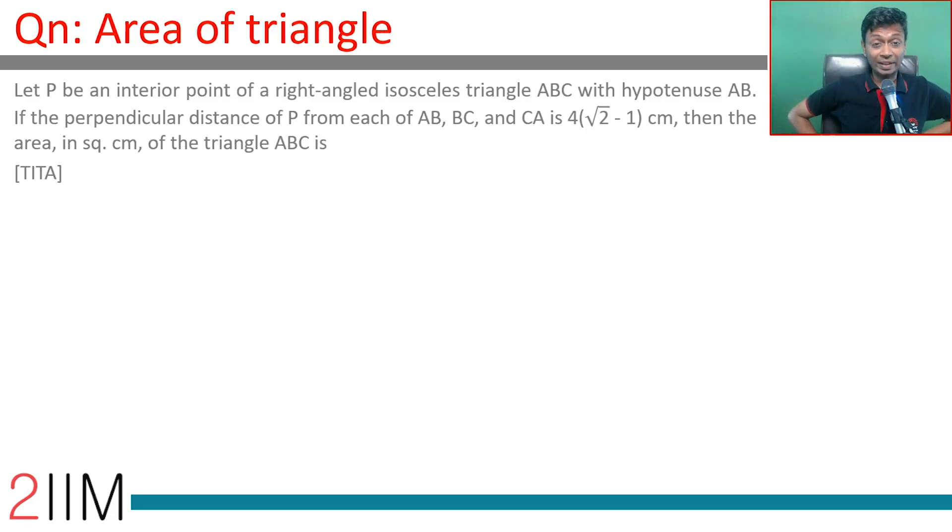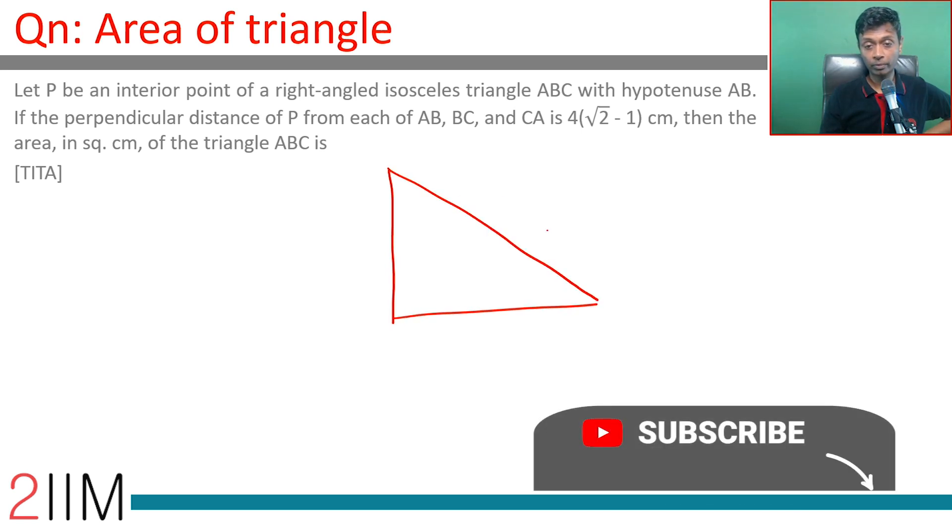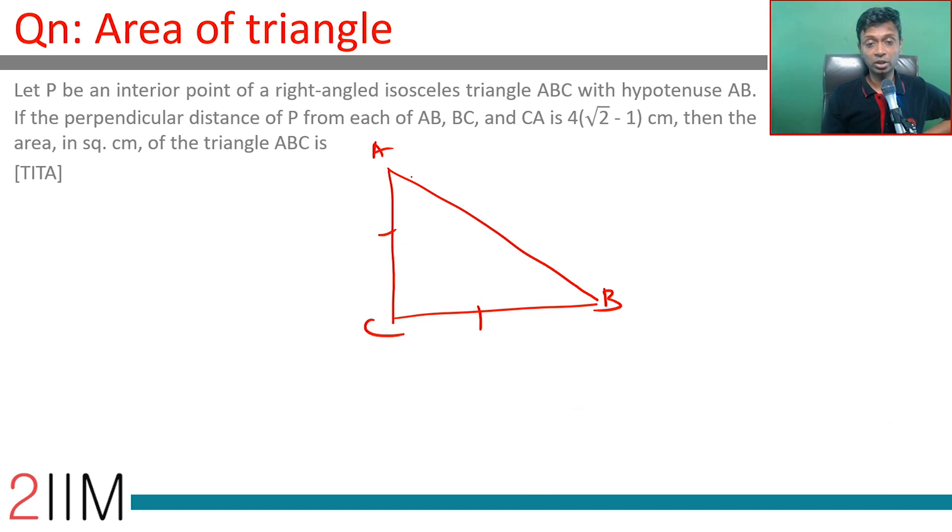Let P be an interior point of a right isosceles triangle ABC with hypotenuse AB. These two sides are equal, this is 45°, this is 45°. The perpendicular distance of P from each of AB, BC, and CA is equal, and each time it is 4(√2 - 1) cm.